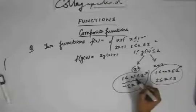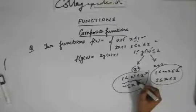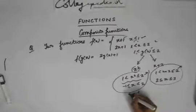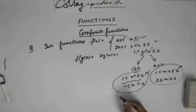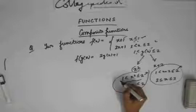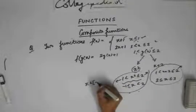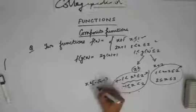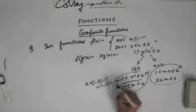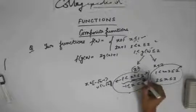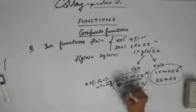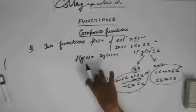From the first case, I will get x lying between minus root 2 to minus 1, union 1 to root 2. You can solve this separately — take x² ≤ 2, solve that inequality, then solve the other inequality, and find the union of the two results.